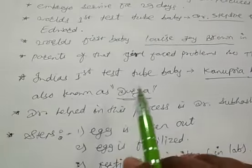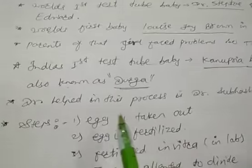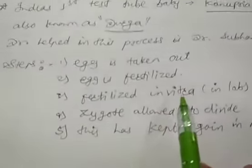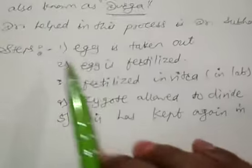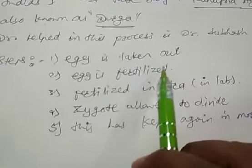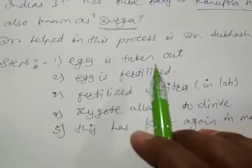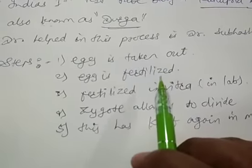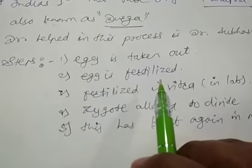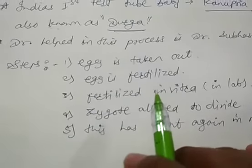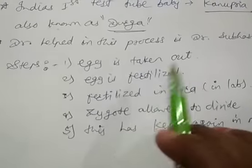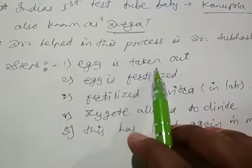The first step is that the egg is taken out — meaning the ovum is obtained from the wife or a donor female. That is the first step: egg retrieval from the female.